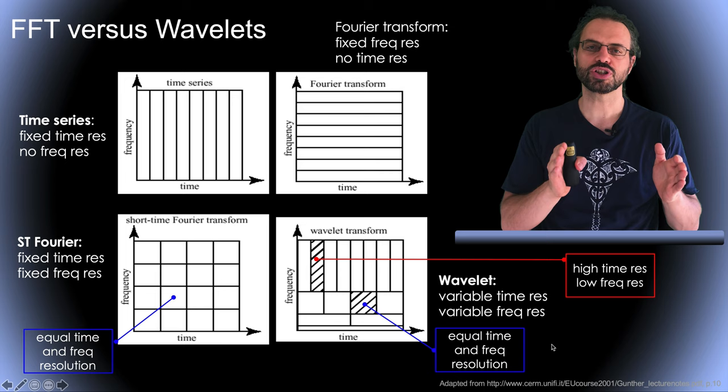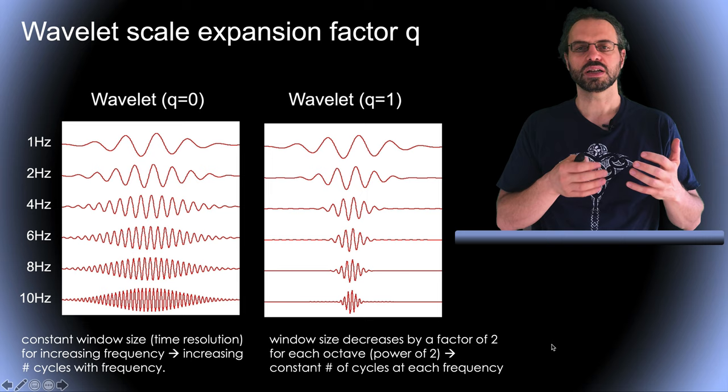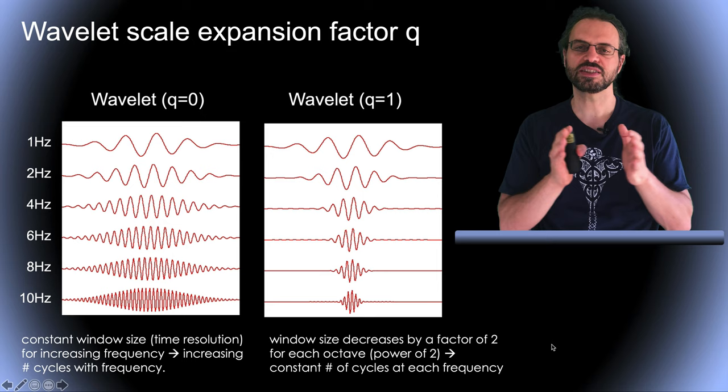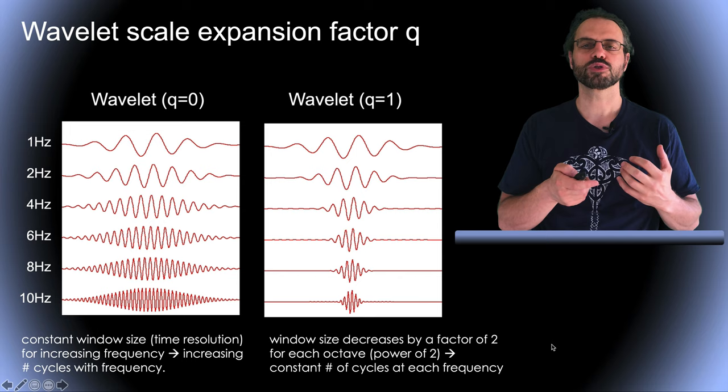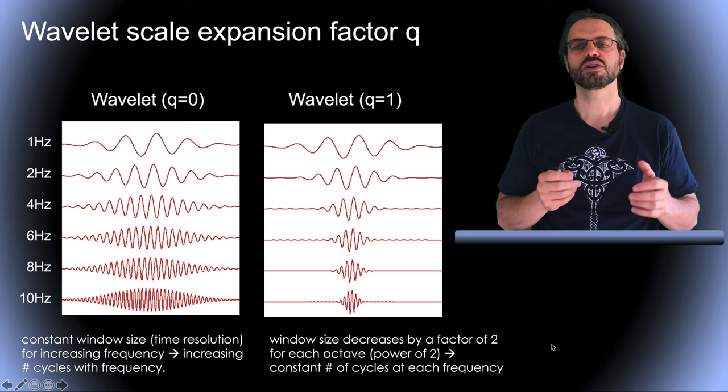In EEGLAB, we use a parameter, the scale expansion factor that automatically adapts the time-frequency resolution by adjusting the width of the Morlet wavelet. On the left, a scale expansion factor of zero is equivalent to a tapered short time Fourier transform. This means that we keep the window size and time resolution constant across all frequencies, and we increase the number of cycles with frequency.